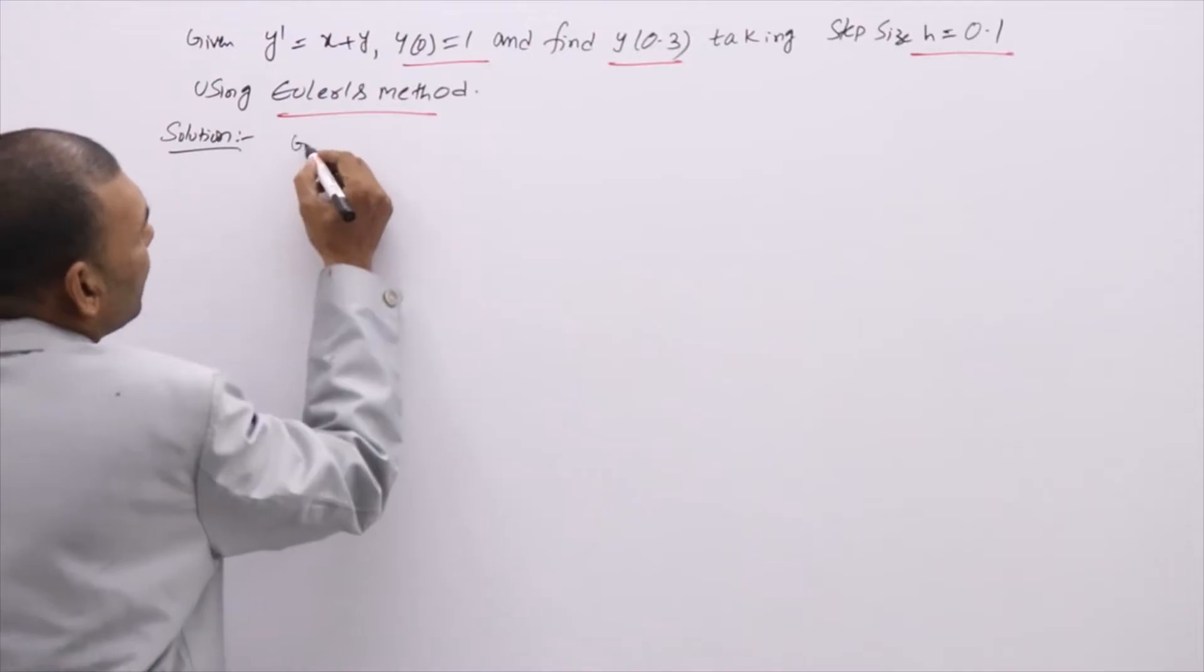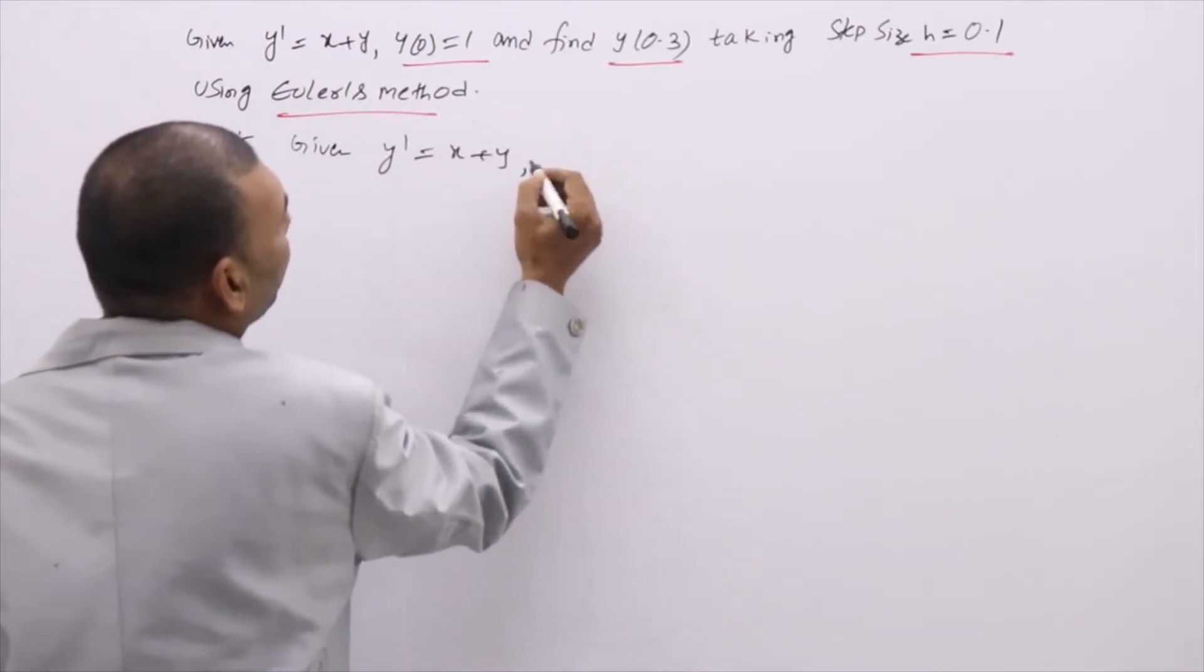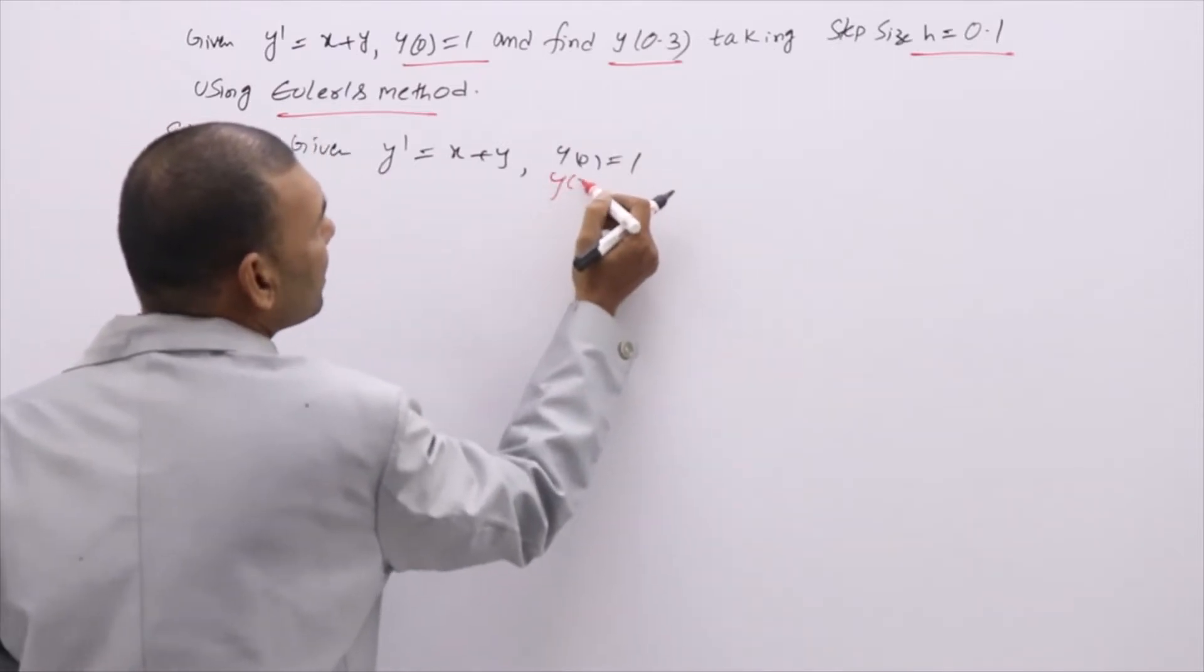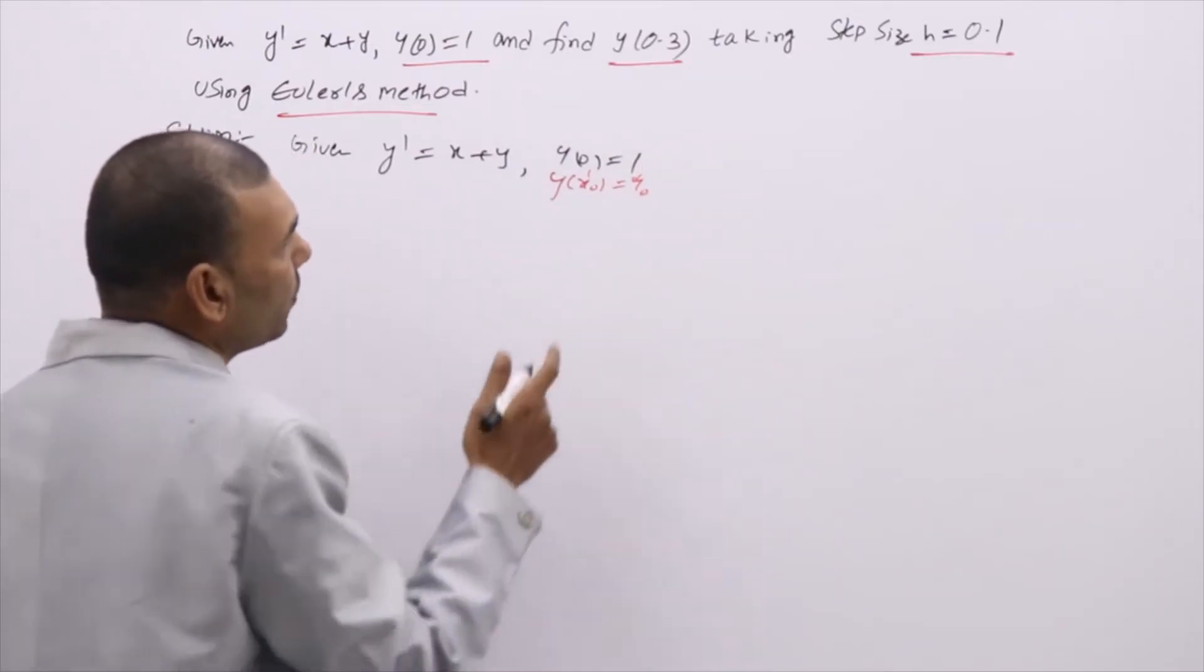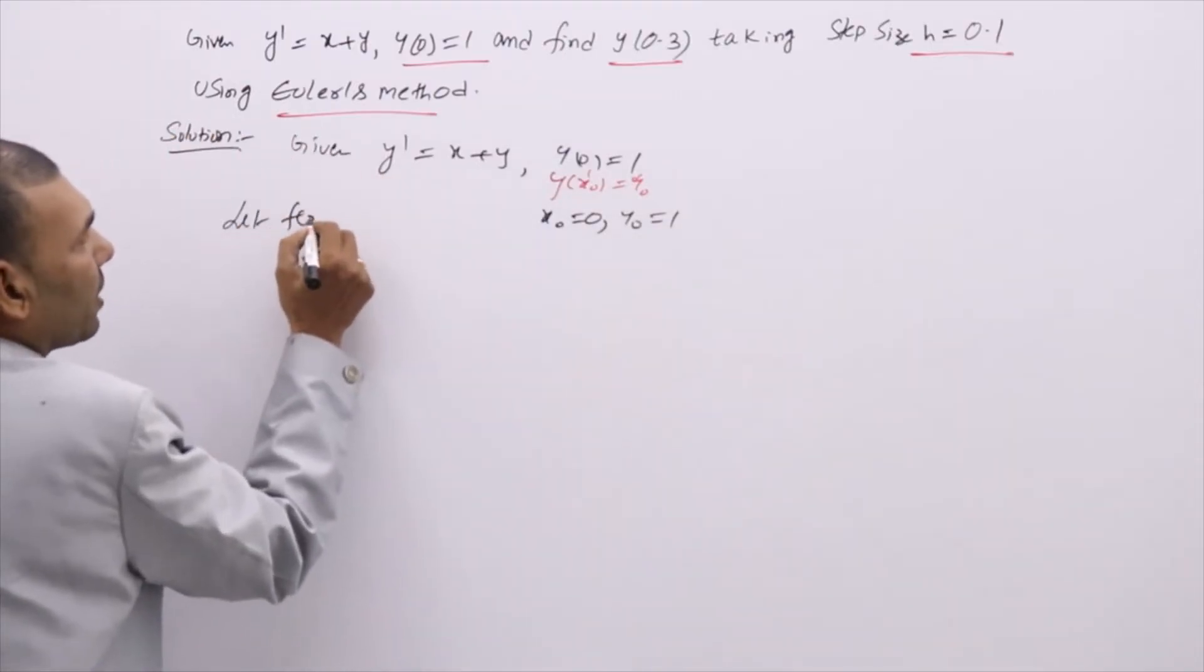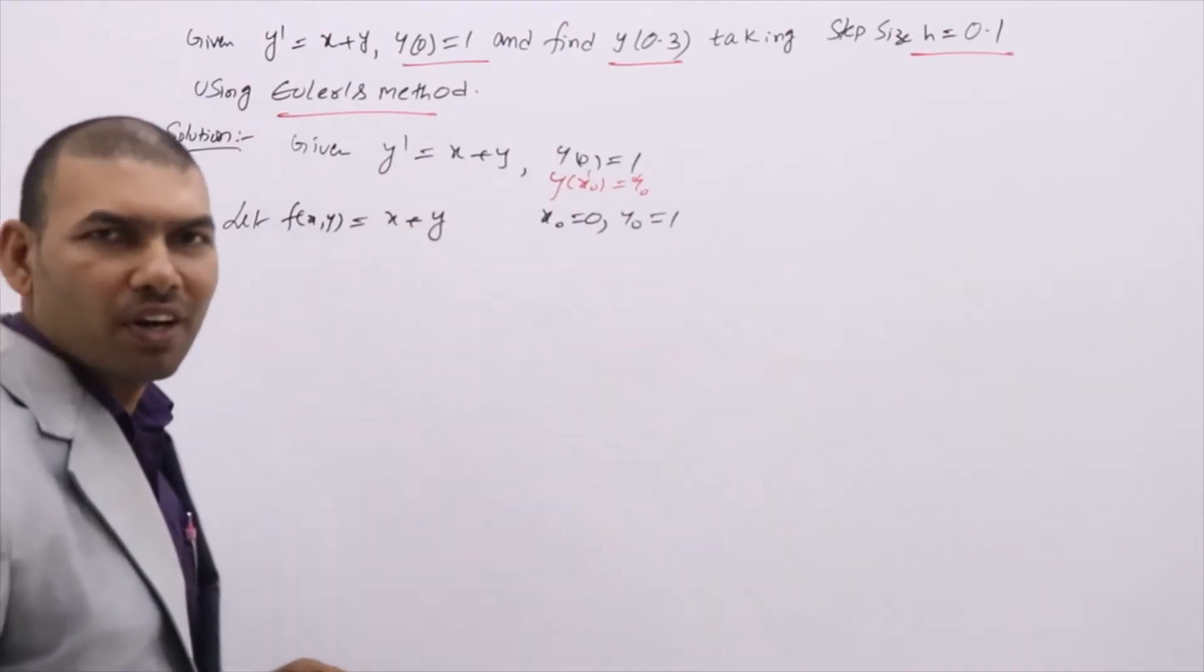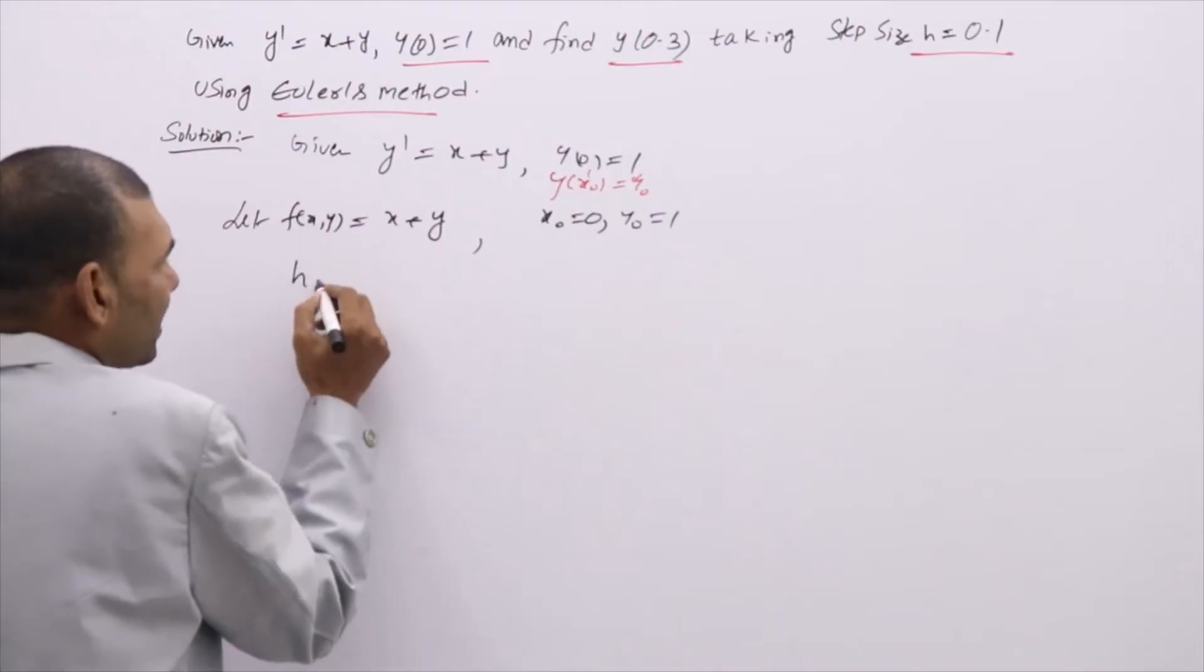First, note down what is given. Given is y' = x + y with initial condition y(0) = 1. Treat this one as y(x₀) = y₀ so that you will get x₀ value and y₀ value. x₀ is 0, y₀ is 1. So let f(x,y) - we assume y' as f(x,y). In all methods f(x,y) is x + y. Now h is given,